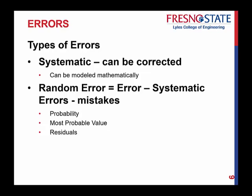Random error is what remains after you subtract systematic error and account for mistakes from your total error. We take out systematic error because it can be corrected. What's left — random error — is caused by factors beyond the control of the observer. These random errors obey the laws of probability. They can be positive or negative, and they are present in every observation.